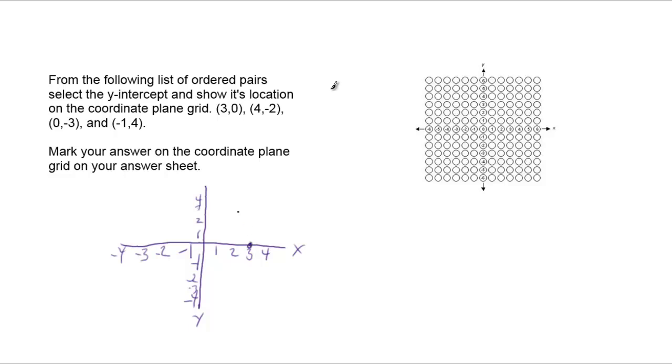The next number is (4,-2). So 4 on the x-axis: 1, 2, 3, 4. Negative 2, so we go down 2: 1, 2. It doesn't have to be exact, just to give you a rough idea.